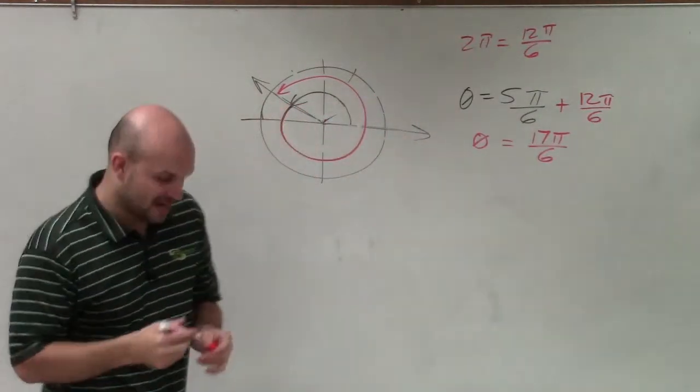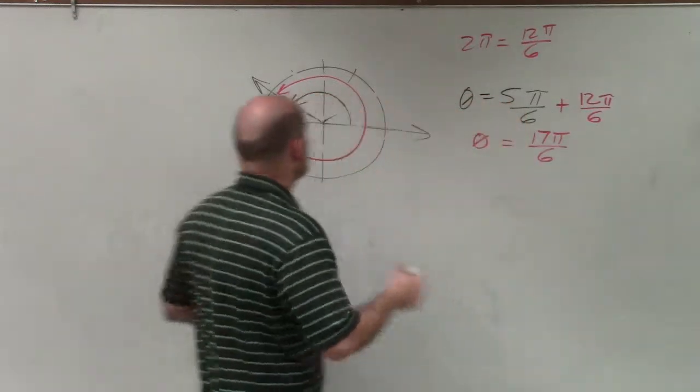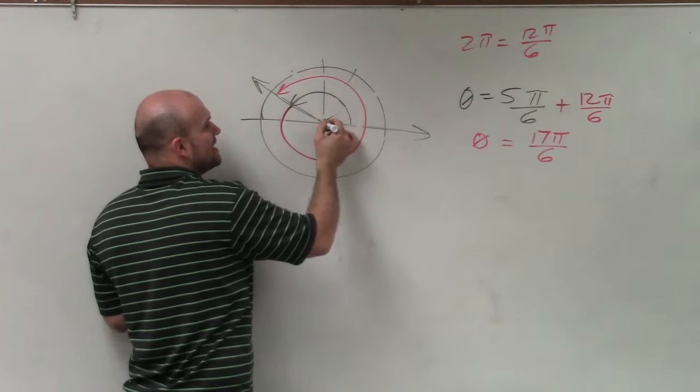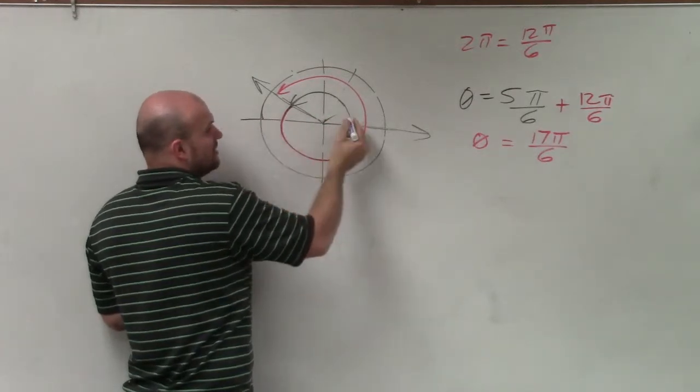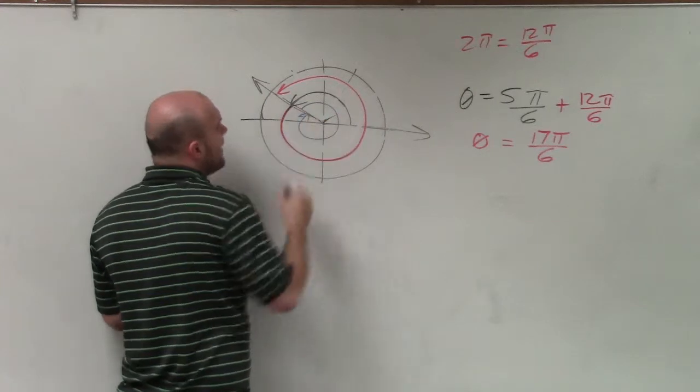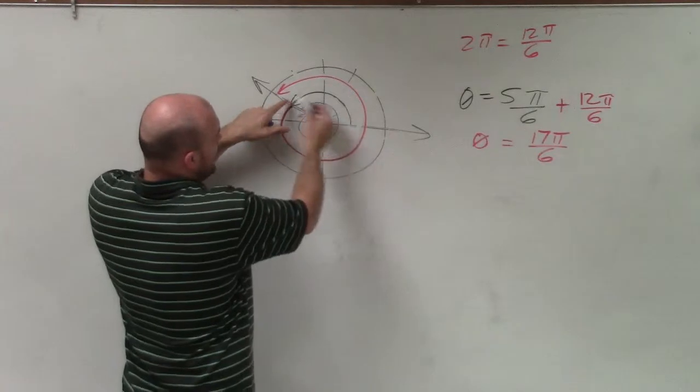Now let's go and look at a smallest negative coterminal. That means the angle's going to have to be negative. So rather than adding 2π, I could also, instead of, let's say, if I start here, and I go in a negative direction.